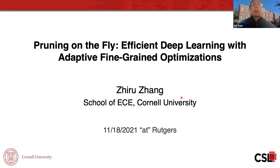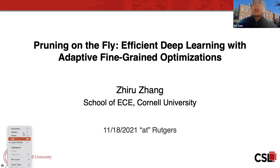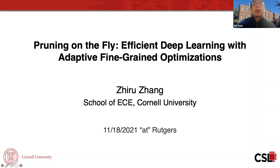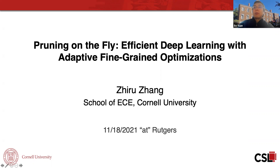Hello everyone, welcome to this week's Rutgers Efficient AI Seminar. Today we're very glad to have Professor Zhiru Zhang from Cornell University. Professor Zhang is currently Associate Professor in the School of ECE at Cornell University. His research investigates new algorithms, design methodologies, and automation tools for heterogeneous computing. His research has been recognized with the Facebook Research Award, Google Faculty Research Award, the DAC Under 40 Innovators Award, the Rising Professional Achievement Award from UCLA, an NSF Career Award, the Ross Freeman Award for Technical Innovation from Xilinx, and multiple Best Paper Awards. Prior to joining Cornell, Professor Zhang was co-founder of AutoESL, a high-level synthesis startup later acquired by Xilinx. Let's welcome Professor Zhang.